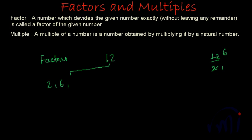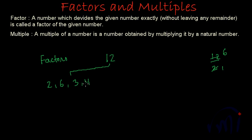And 2 plus 1 is 3, that means 12 is divisible by 3. So 3 is a factor of 12, and when we divide it by 3 we get 4 as the result. So if we talk about the factors of 12, 2, 6, 3 and 4 are its factors.